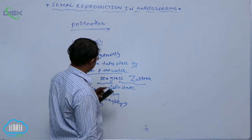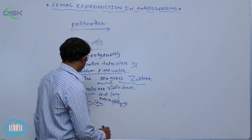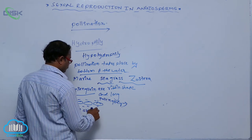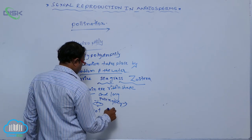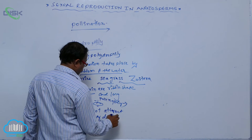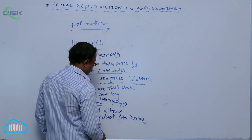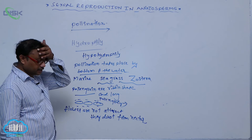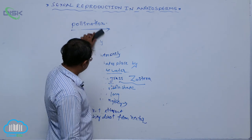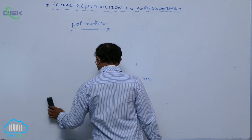In anemophilic and hydrophilic plants, flowers are generally not attracted and they do not produce nectar, because it is not necessary for the plant. They are pollinated by wind or water. These are known as abiotic factors or abiotic agents.